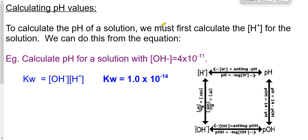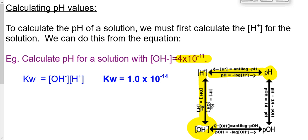Example: calculate the pH for a solution where the hydroxide concentration is 4×10⁻¹¹ mol/L. We start at [OH-] on the square and need to get to pH. We can go two directions; in this example we'll go up to hydrogen first using the Kw expression, then over to pH using the log. Rearranging Kw = [H+][OH-] to solve for hydrogen: [H+] = Kw ÷ [OH-].